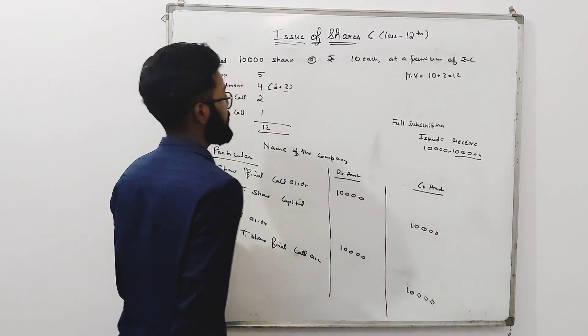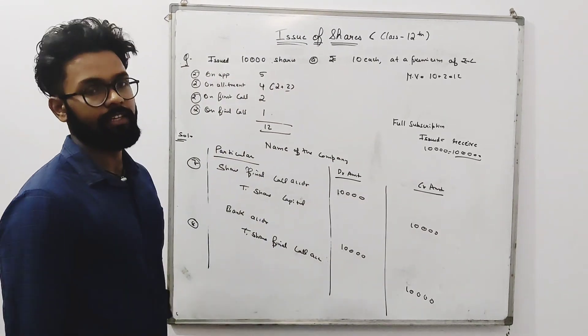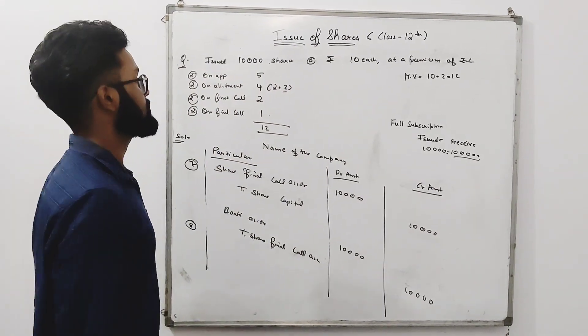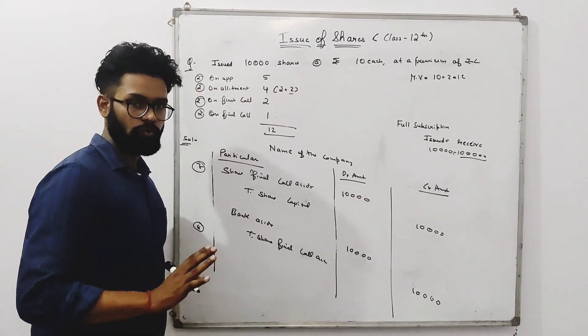So this is our normal portion — issue of shares — covering all four features: causes, areas, and the issue entries.